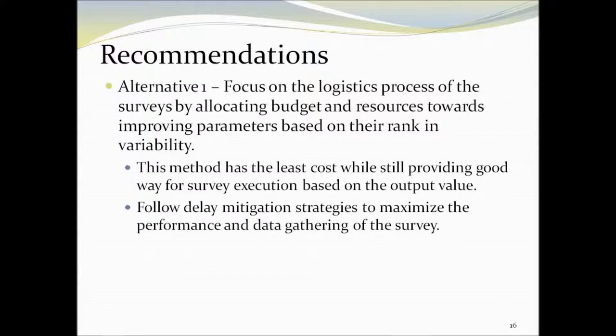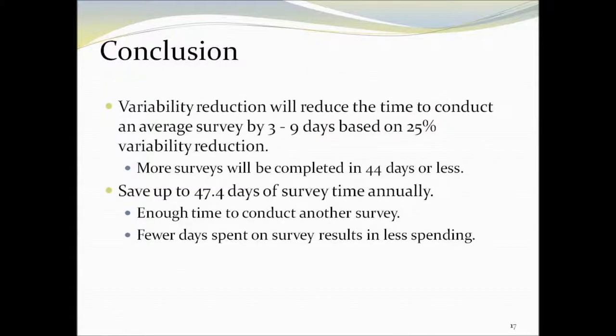Our recommendation is to follow alternative 1 because it has the least cost while still providing good results based on the output. The variability reduction results in saving between 3 to 9 days based on 25% variance reduction. This will save up to 47.4 days of survey time annually, leaving room to conduct another survey or save money in the long run.